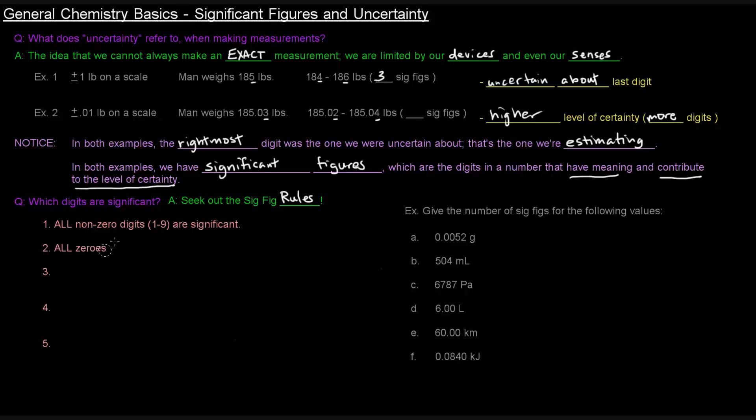Rule number two: all zeros written between non-zero digits are significant. So you'll notice in the second example, we had 185.03, .02, and .04. The zero here is in between these other non-zero digits, and non-zero digits are always significant. So in this case, we've got five significant figures in each of those three different example numbers.